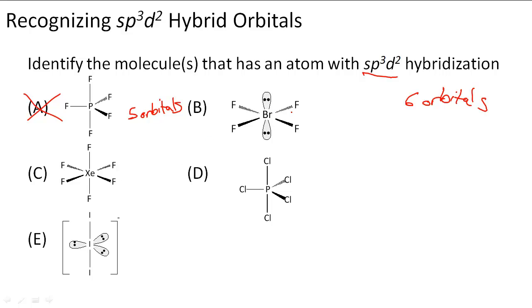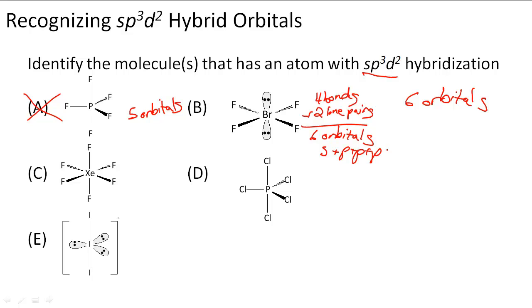B has 1, 2, 3, 4 bonds and 2 lone pairs — so 4 bonds and 2 lone pairs. If I add those up, I get 6 orbitals. And so this one must have s + p + p + p + d + d, which equals sp3d2 hybridization. So B definitely counts.